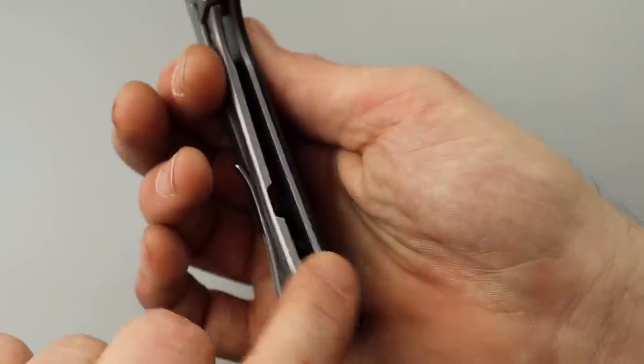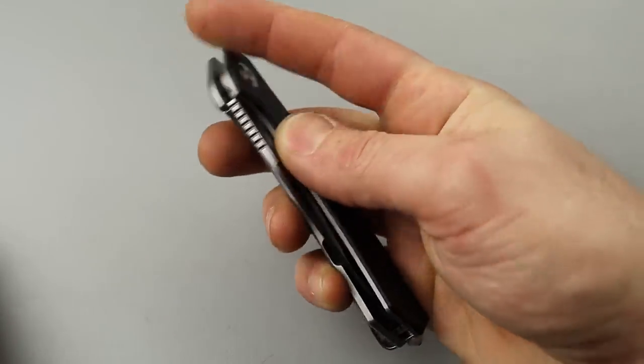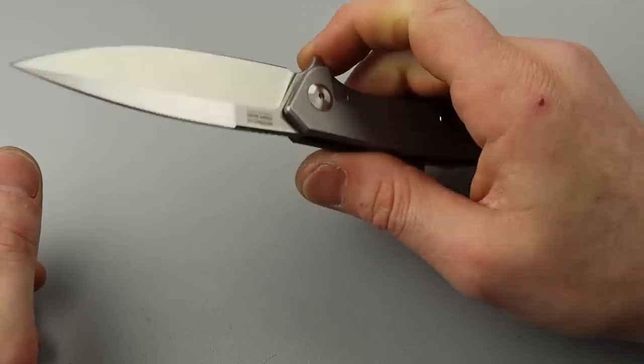Detent is great on this. G10, good quality. We do have a steel liner on the opposite side and a G10 backspacer. But yeah. I'm liking it, man. I'm liking it quite a bit.